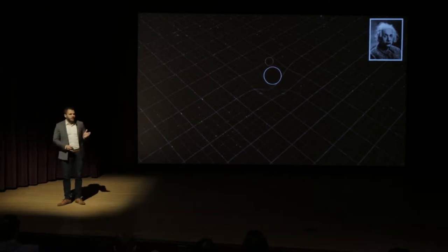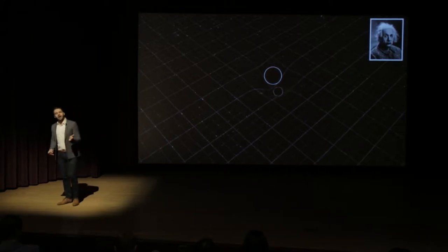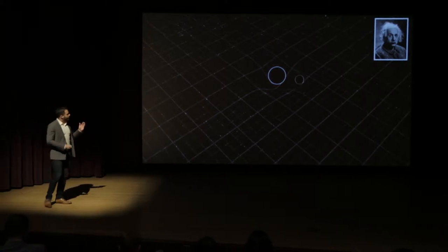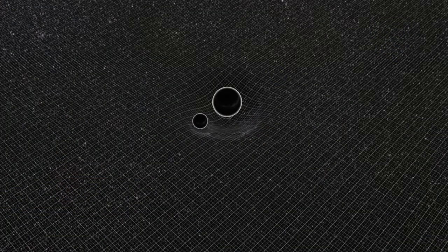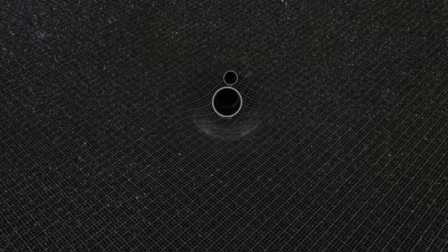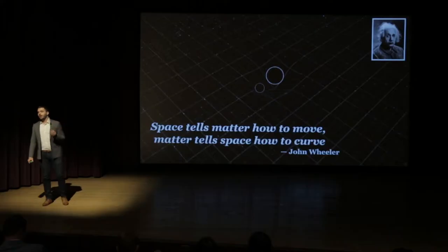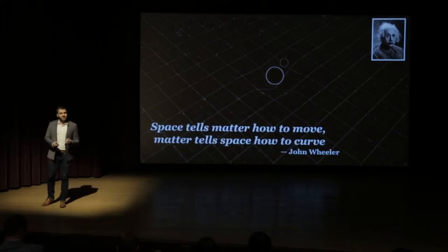Now in this theory, space isn't a fixed background on which events occur, a cosmic stage if you will. Rather, space bends and stretches in the presence of matter and energy itself. And said concisely by the physicist John Wheeler, space tells matter how to move and matter tells space how to curve.